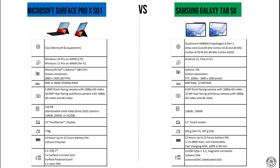For the graphics, the Surface Pro X SQ1 features an Adreno 685 GPU with a screen resolution of 267 PPI, compared to the Adreno 730 on the Tab S8 with a display frequency up to 120 hertz and a resolution of 2560 by 1600 pixels.